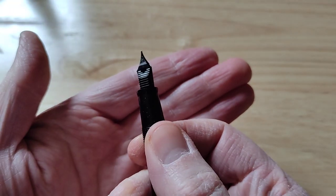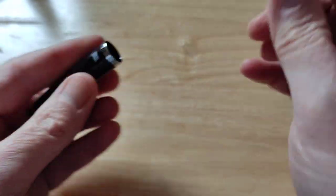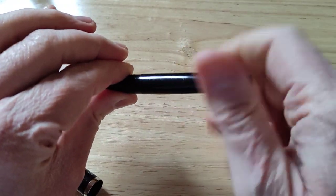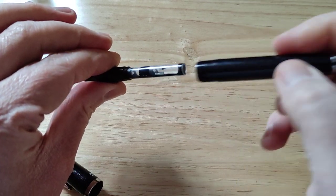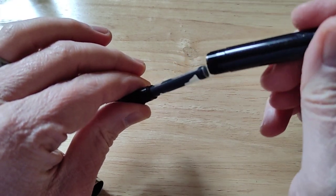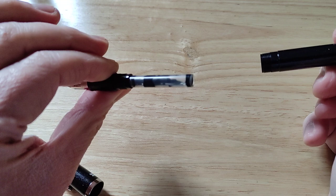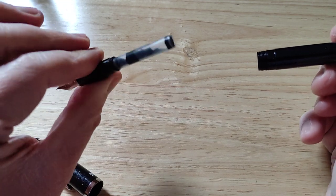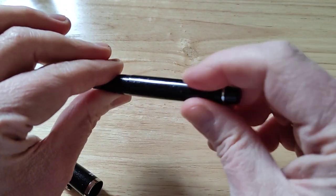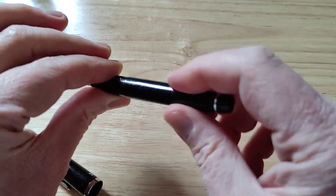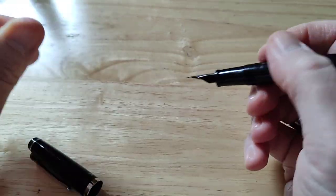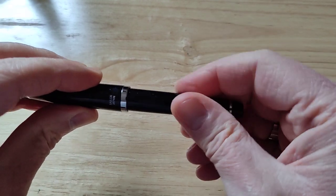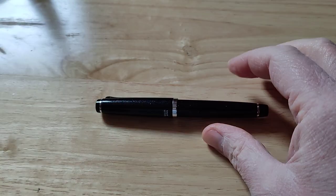Steel nib, black plastic feed, nothing extraordinary. Unscrew the barrel, and of course, being a Sailor fountain pen, it takes Sailor cartridges, or converters. This is the black Sailor cartridge that this came with. They do come in a box. So there is the fountain pen. So let's have a look at how this pen writes using my Rhodia paper, as usual.